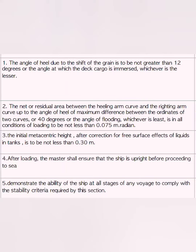The net or residual area between the heeling arm curve and the righting arm curve, up to the angle of maximum difference between the ordinates of the two curves or 40 degrees or the angle of flooding — whichever is least in all conditions of loading — shall not be less than 0.075 m·rad. Because the risk has already been considered, the area requirement under the GZ curve has reduced to 0.075 from 0.09 in normal cases. The initial metacentric height after correction for free surface effect of liquids in tanks is not to be less than 30 cm — exactly double what is normally required on other ships. After loading, the master shall ensure the ship is upright before proceeding to sea, and shall be able to demonstrate the ability of the ship at all stages of the voyage to comply with the stability criteria.